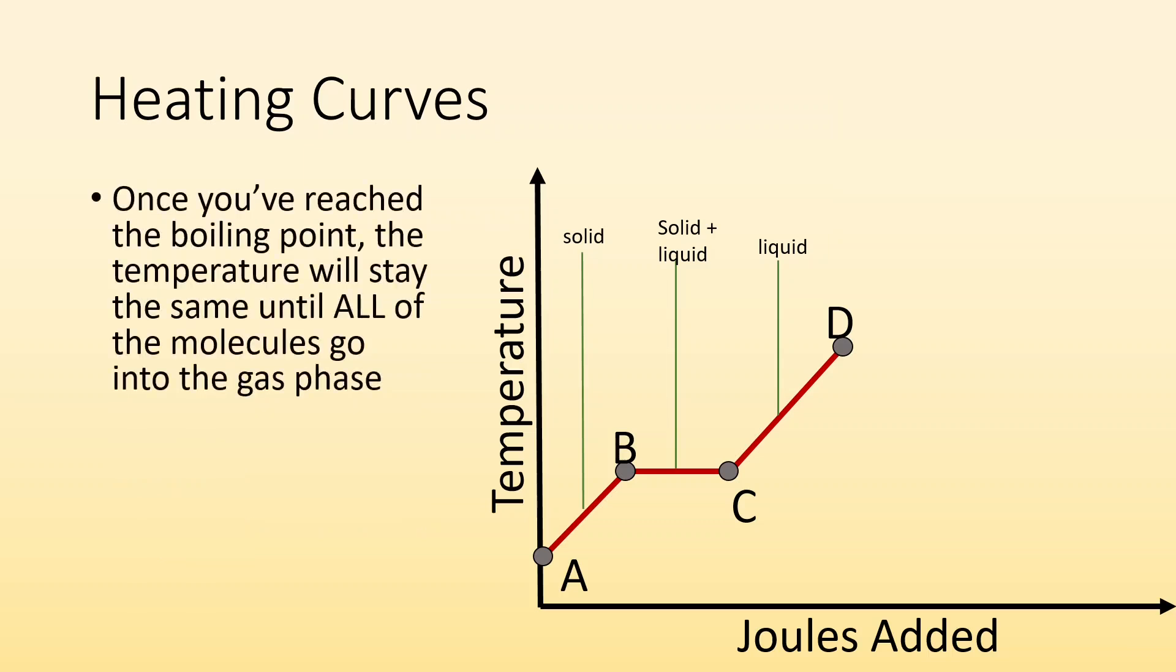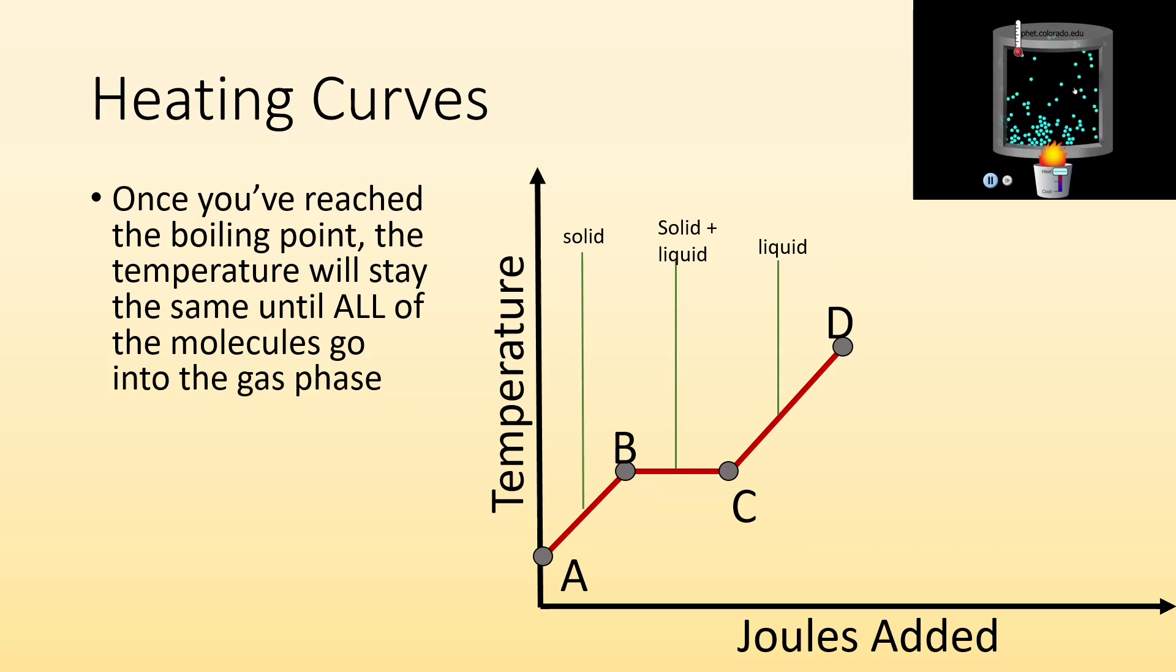So once you reach the boiling point, the temperature will stay the same again until all of the molecules make it into the gas phase. So you've got to keep adding heat, adding heat, vaporizing those liquid particles into the gas state. Temperature is going to stay the same. We're going to have two phases present. We're going to have the liquid and the gas phase present until all of it vaporizes. So temperature flat.